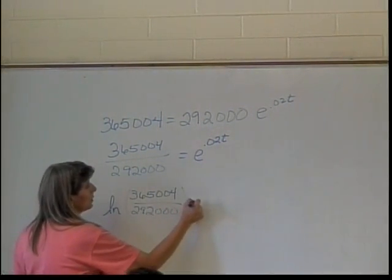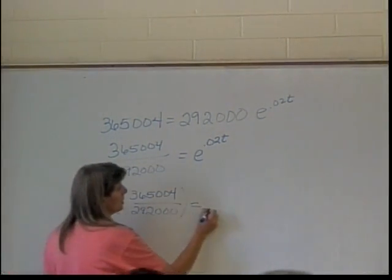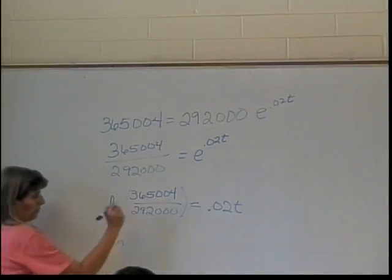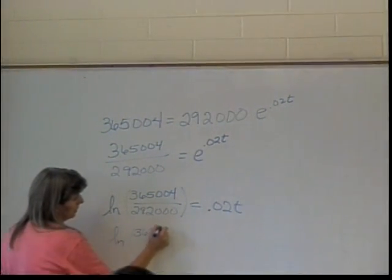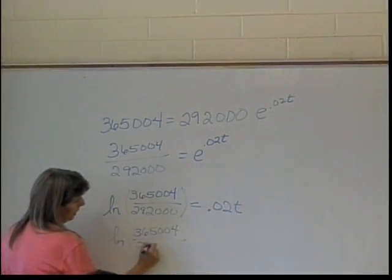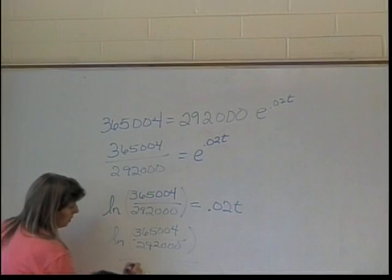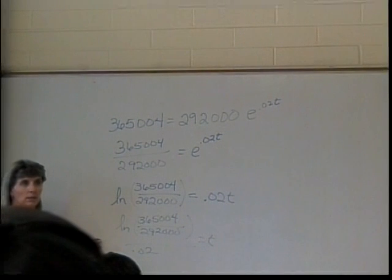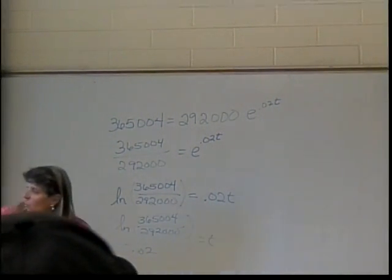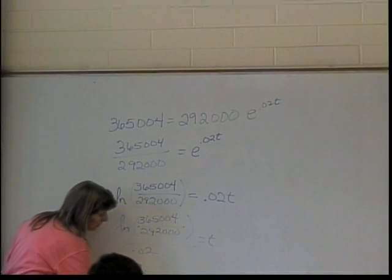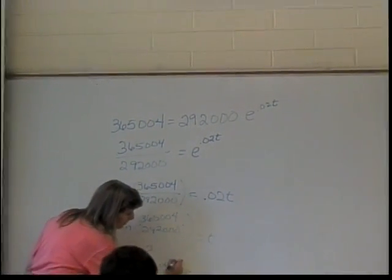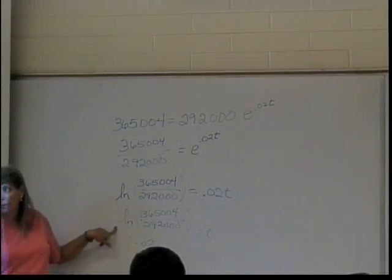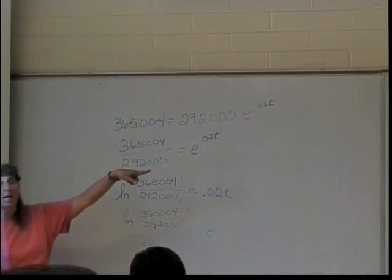So ln(365,004 / 292,000) equals 0.02t. I can just divide by 0.02: ln(365,004 / 292,000) divided by 0.02 equals t. But this is not what I was asked for — I was asked in what year this will happen. So I calculate it and it comes out to about 11.158 years since 1998.